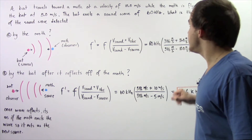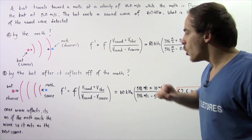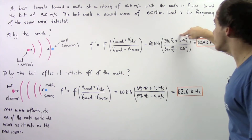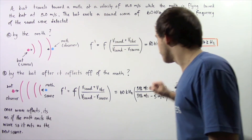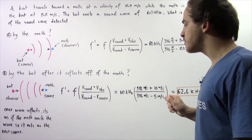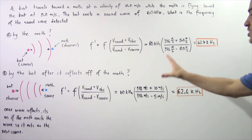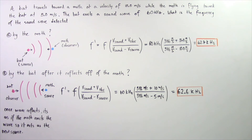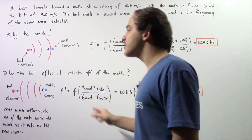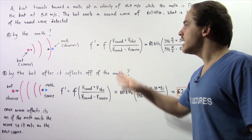Our source frequency is 60 kilohertz multiplied by 346 meters per second. Now the velocity of the observer is 10 meters per second because the observer is the bat, and the velocity of the source — the moth — is 5 meters per second. Plugging that into our equation, we get approximately 62.6 kilohertz. Notice these two frequencies are different: the frequency perceived by the bat when the sound wave reflects is lower than the frequency perceived by the moth.